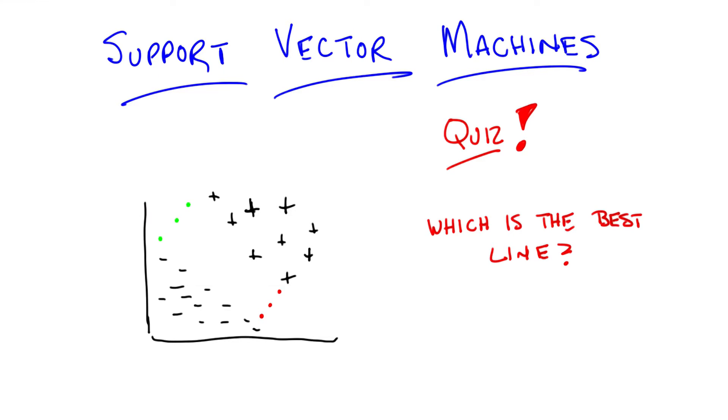All right, Michael. So, you got it. Which line do you think is best? All right, so if I choose one green and one red, that means there's nine different possible lines, but they all separate the points.